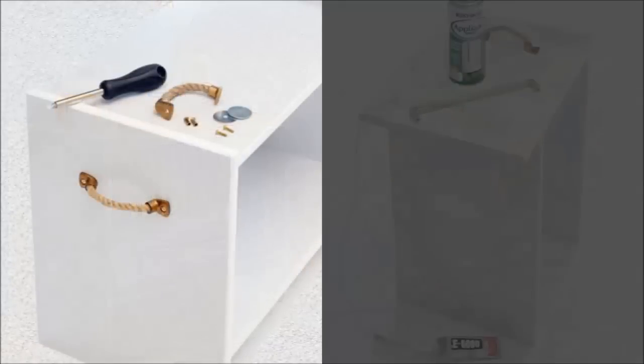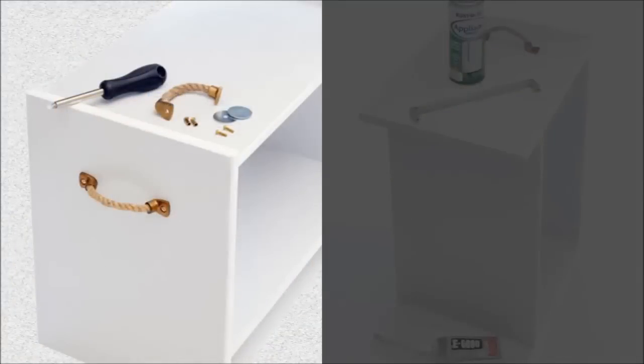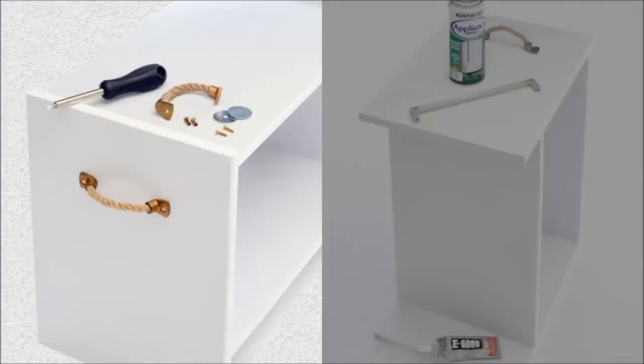Step 2: Attach rope drawer pulls at the side of the cabinet. Step 3: Attach the legs from the IKEA metric. Cover them with white spray epoxy. Once dry, secure them with a heavy-duty adhesive.